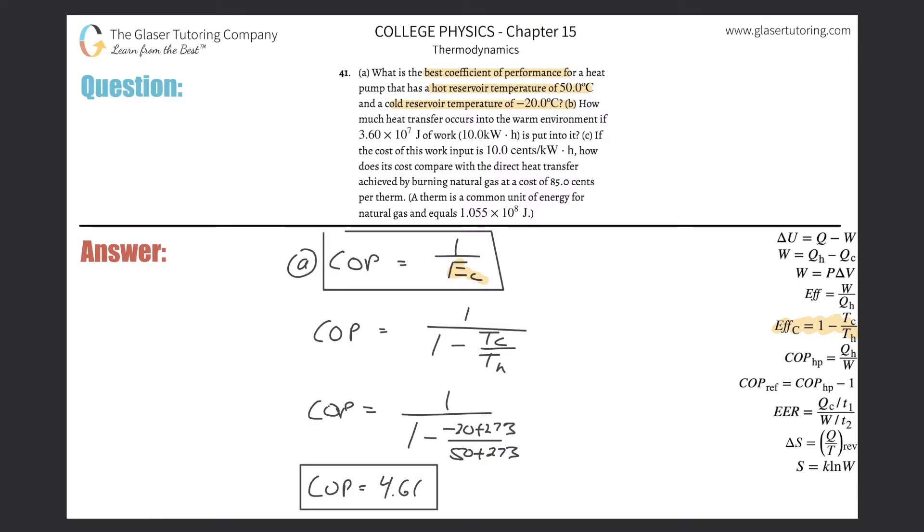And then letter B, how much heat transfer occurs into the warm environment if 3.6 times 10 to the 7 joules of work is put into it. Okay, so I have to now basically try and relate a couple of things together. I know I can find the Carnot efficiency. If the Carnot efficiency here is just going to be 1 minus whatever this denominator actually was. So basically, I'm trying to relate then work, efficiency, and to heat transfer. Those are the three things. And I realize, oh look, there is the formula. It's right over here on the right-hand side.